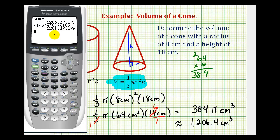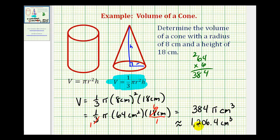And since we did get the same decimal approximation, this verifies that we did find the volume correctly. So what this tells us is that approximately 1206.4 little cubic centimeters would fit inside this cone.